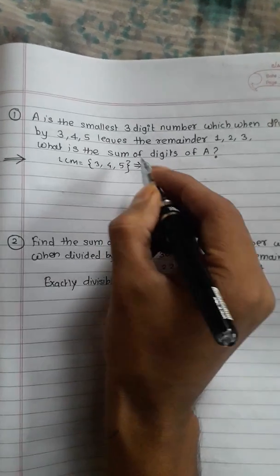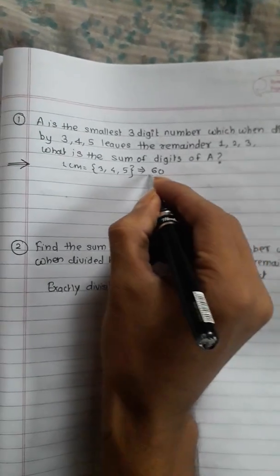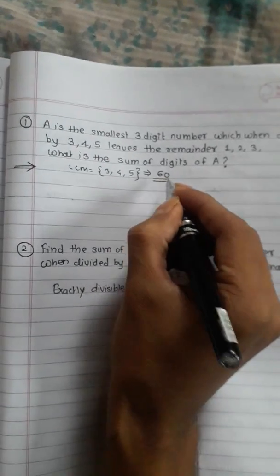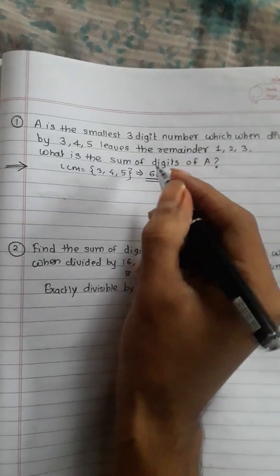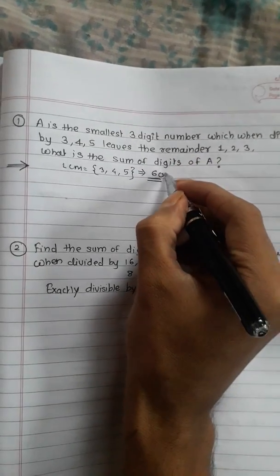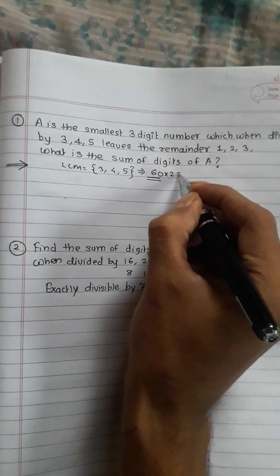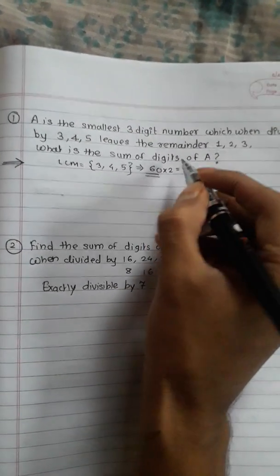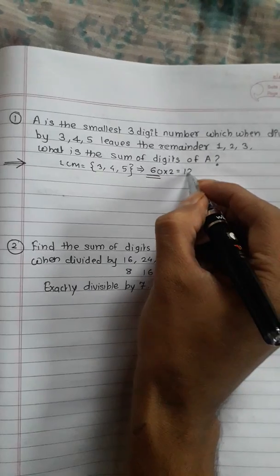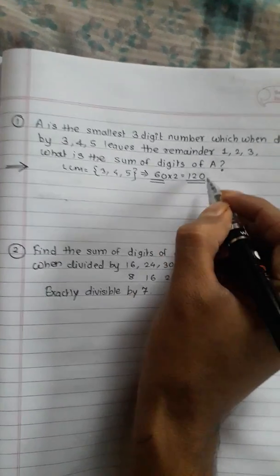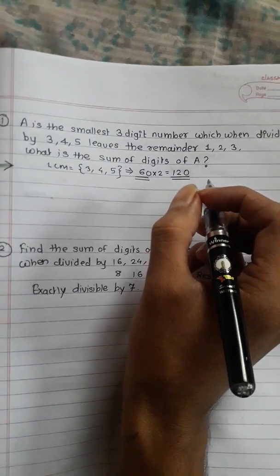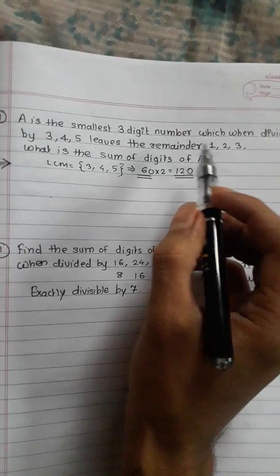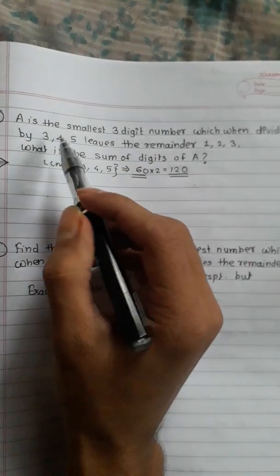The LCM of 3, 4, and 5 is 60, but 60 is a 2-digit number and we want a 3-digit number. So the smallest 3-digit multiple will be 120. This is the 3-digit number.